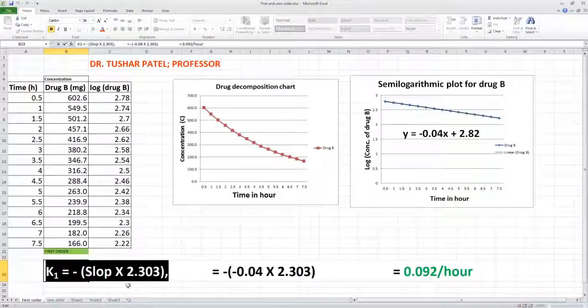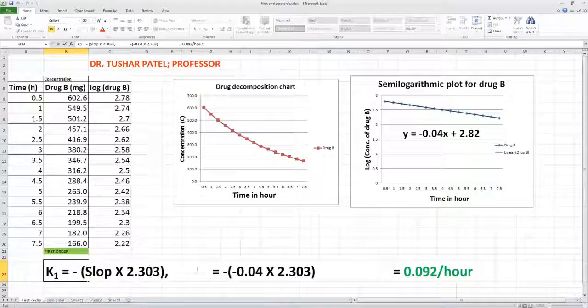The slope here is -0.04. Keeping the value of slope in the equation, you will get the value 0.092 per hour.